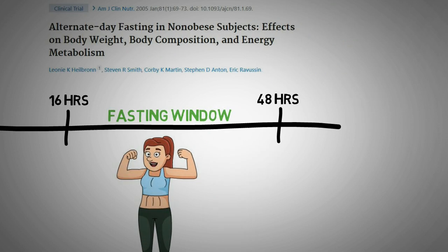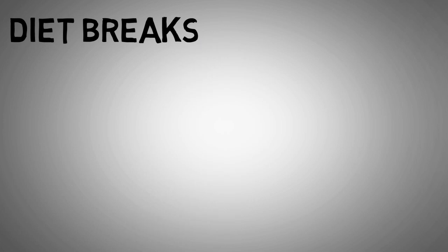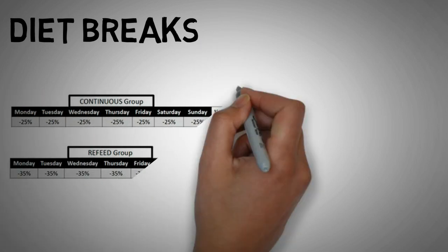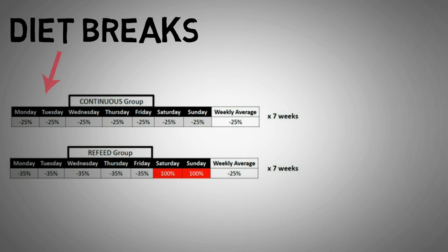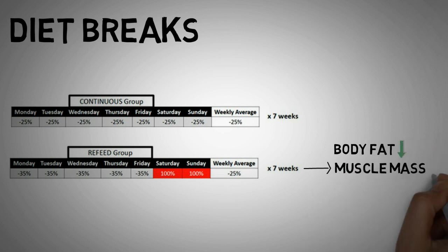Another great way to prevent a metabolism slowdown is to include diet breaks during your weight loss journey. Researchers divided people into two groups. One group dieted continuously with a 25% caloric deficit on every day of the week, while the other group restricted the calories by 35% from Monday till Friday and had a diet break on weekends. After 7 weeks, the diet break group lost more body fat, kept more lean muscle mass and the metabolism slowed down less compared to the continuous diet group.